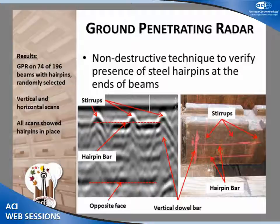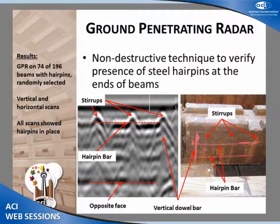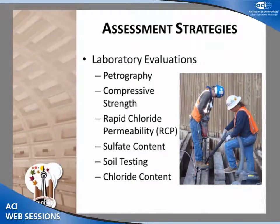We also did GPR because of the hairpin issues on the adjacent trickling filter. We wanted to verify whether the hairpins were in place, so we did both horizontal and vertical scans at the ends of the beams, covering roughly 40% of the beams. All scans showed that all the hairpins were in place. So GPR revealed we didn't have any issues like we had on the first trickling filter.